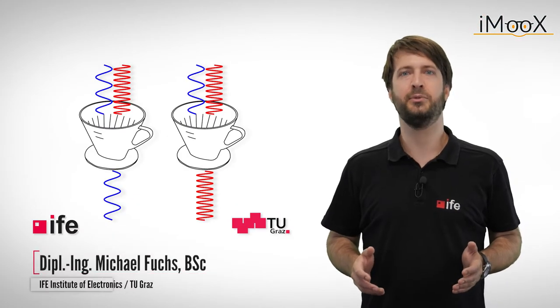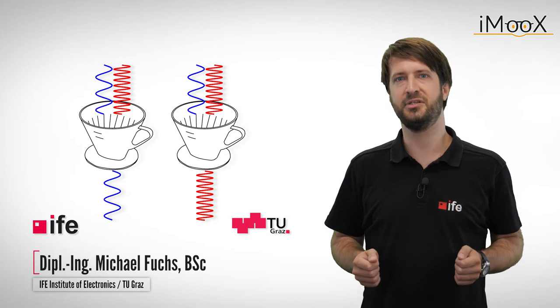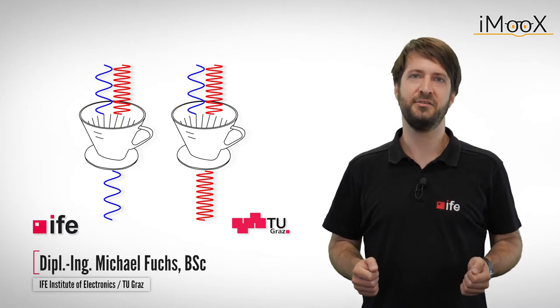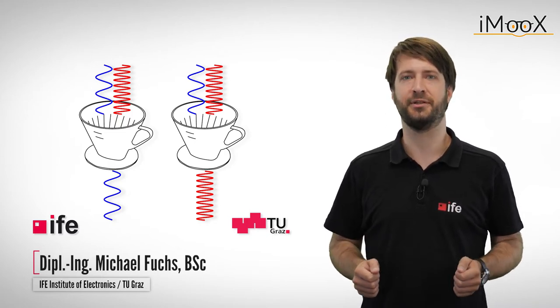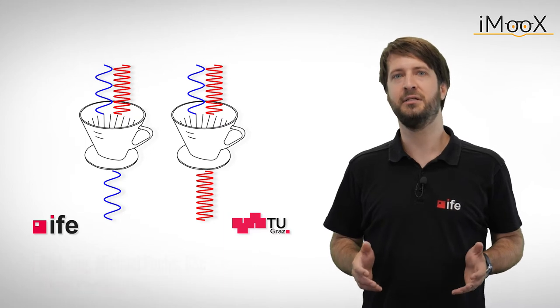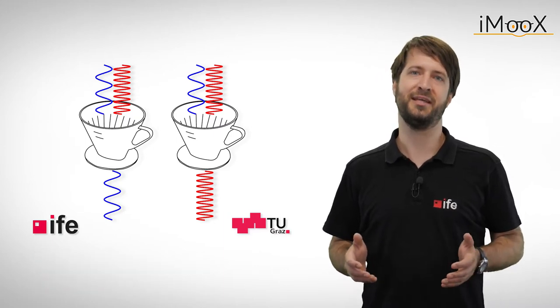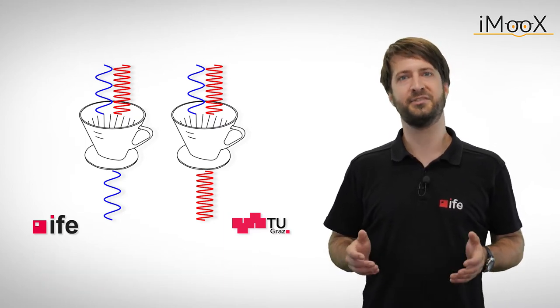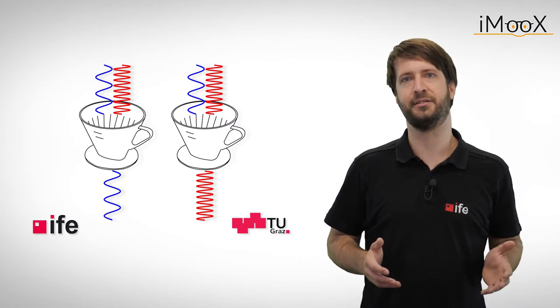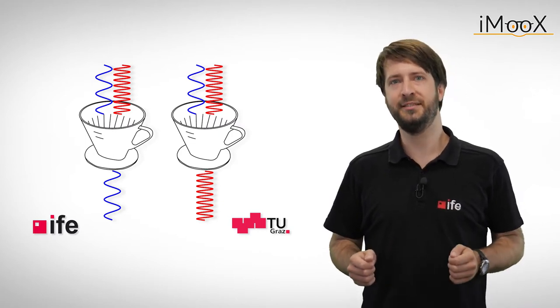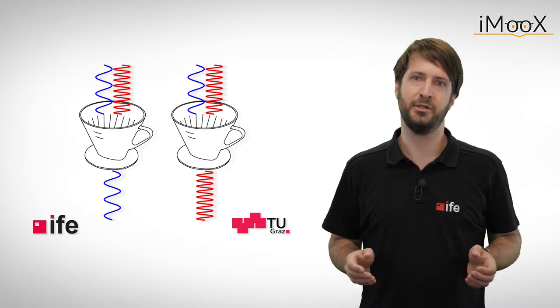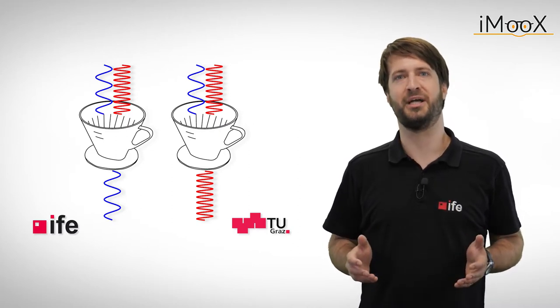In our last video we discussed one of the simplest filters used in electronics, a passive first-order RC filter. This filter can attenuate high-frequency AC signals while it passes through low-frequency AC signals. As we have already seen, this little circuit does the trick in principle, but its behavior is far from ideal.